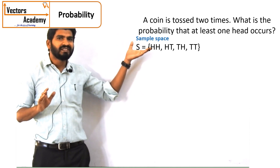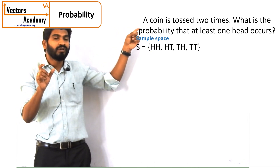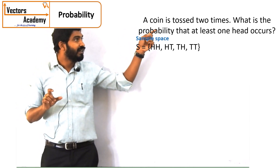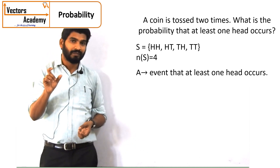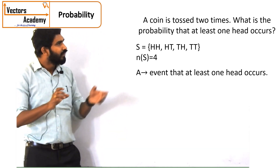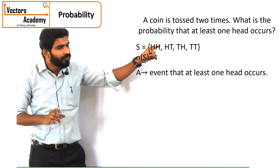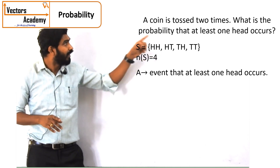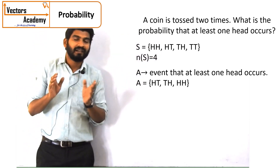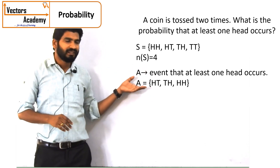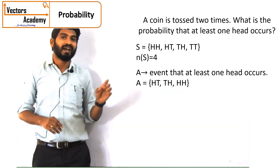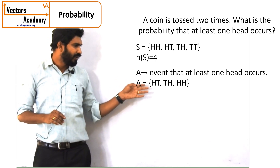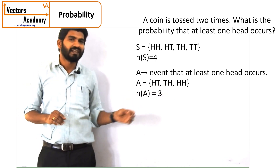The set of all these possible outcomes is denoted by S, which is called the sample space — it is a set of all possible outcomes. Our event is the thing which has been asked: that is, at least one head shows up. At least one head — we can see there are 3 different outcomes where there is at least one head: head-tail, tail-head, and two heads. At least one means one or more than one head, so there are 3 different events where we have at least one head.